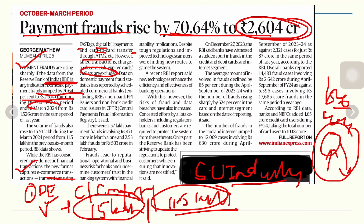Failed transactions, chargebacks, reversals, expired cards, and wallets are still excluded. Data on domestic payment fraud statistics is reported by scheduled commercial banks, non-bank PPI issuers, and non-bank credit card issuers in the Central Payment Fraud Information Registry. In March alone, 2.57 lakh payment frauds involving ₹471 crore occurred, and in February, 2.53 lakh frauds involving ₹503 crore were recorded. Frauds lead to reputational, operational, and business risks for banks and undermine customer trust in the banking system.